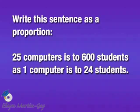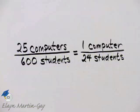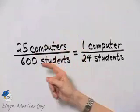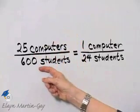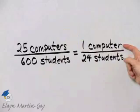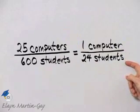Then we have our other ratio or rate: one computer is to 24 students, and we write that as a fraction also. And here we have our proportion — 25 computers is to 600 students as one computer is to 24 students.